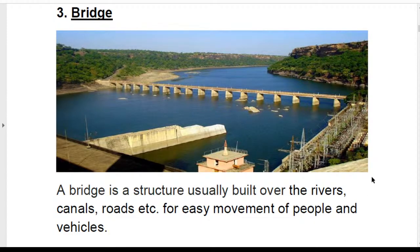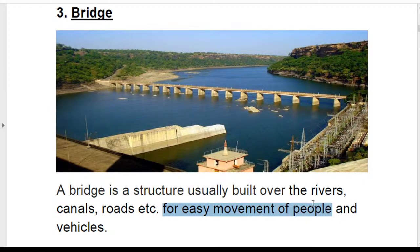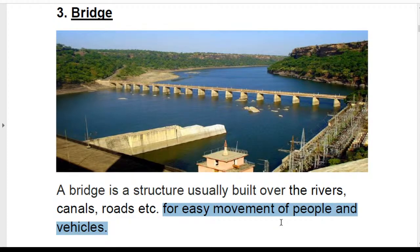The next topic is bridge. A bridge is a structure usually built over rivers, canals, roads, etc. for easy movement of people and vehicles. Just remember 'structure built over rivers, canals, and roads' for the definition, and the purpose is for easy movement of people and vehicles.